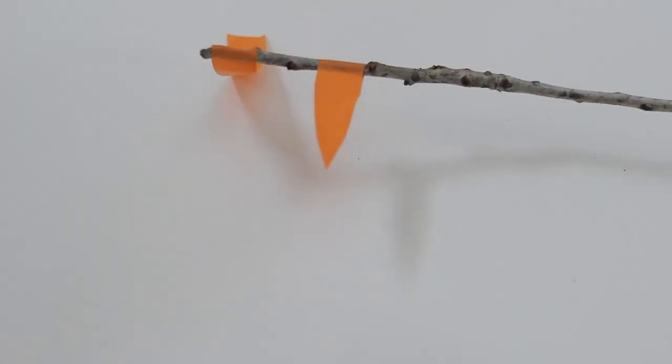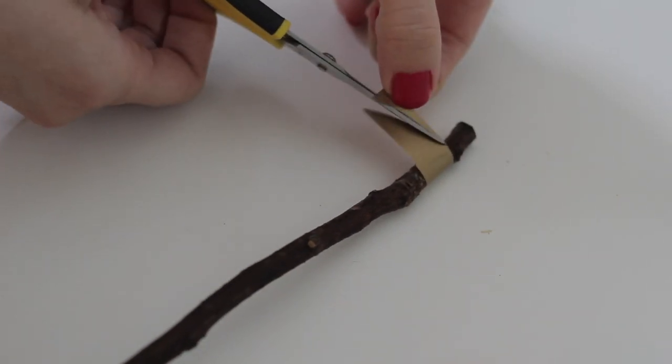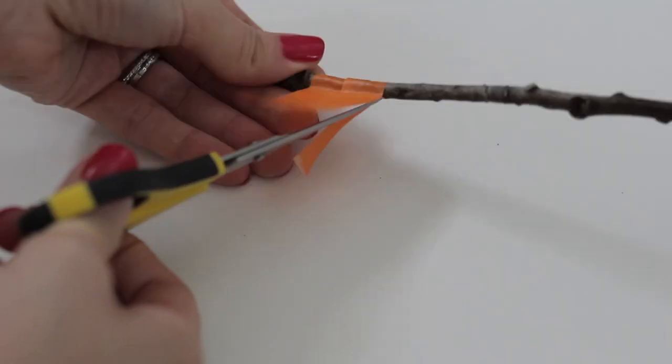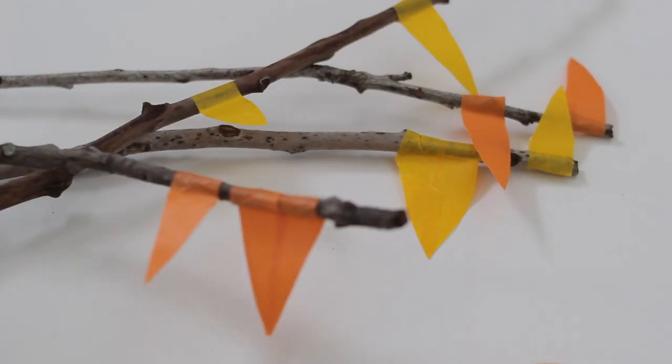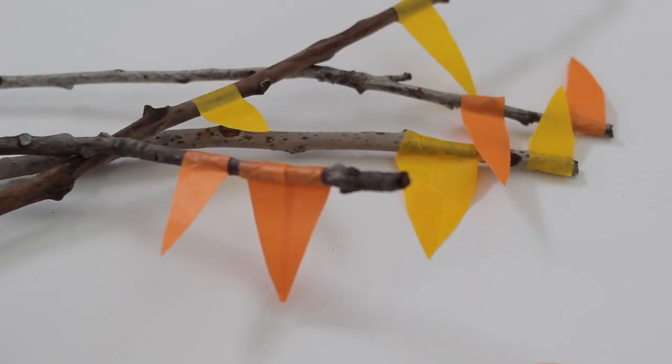Now just add tape to the other branches. You can also use two pieces of tape next to each other to create larger leaves. Alternate the colors to create the look of fall leaves.